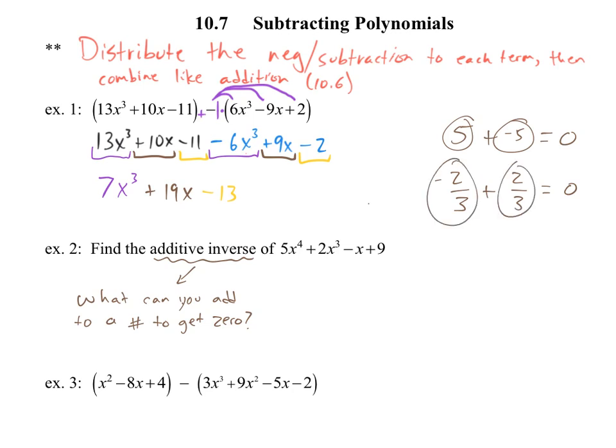Because if I start out negative 2/3 on my number line, if I add 2/3, I go 2/3 to the right and I get right to 0. So additive inverses are really going to be, this is probably not proper math, but the same number, but one is positive and the other is negative.